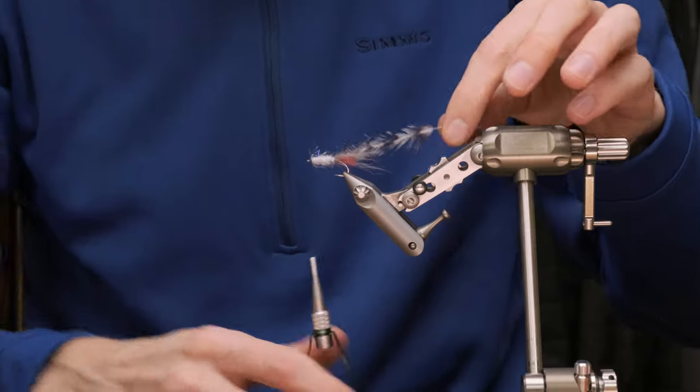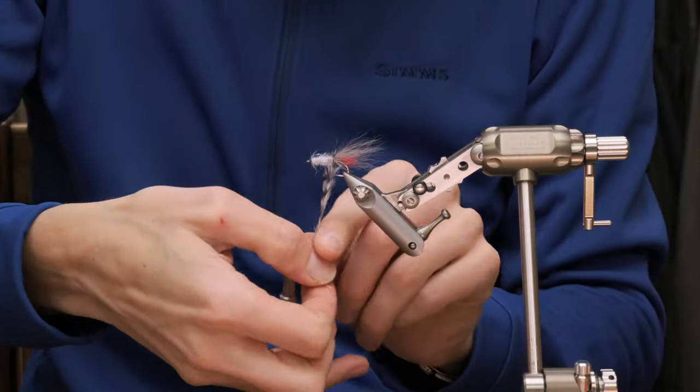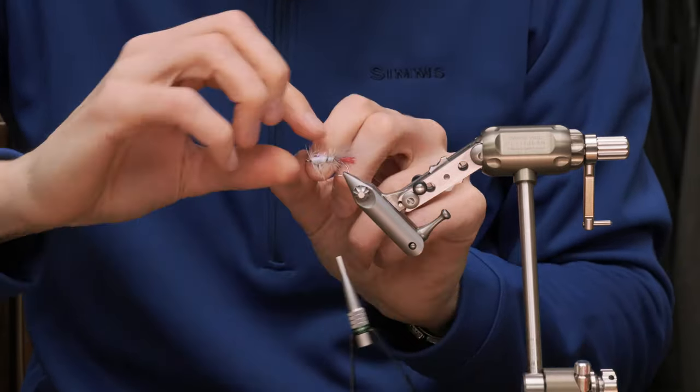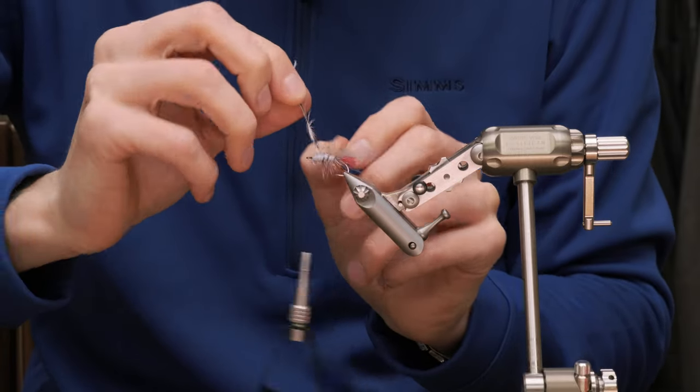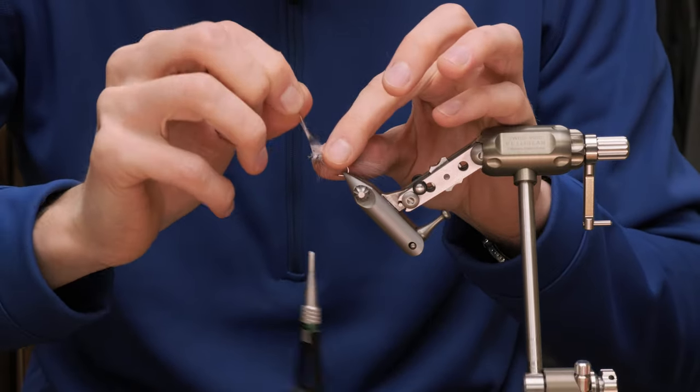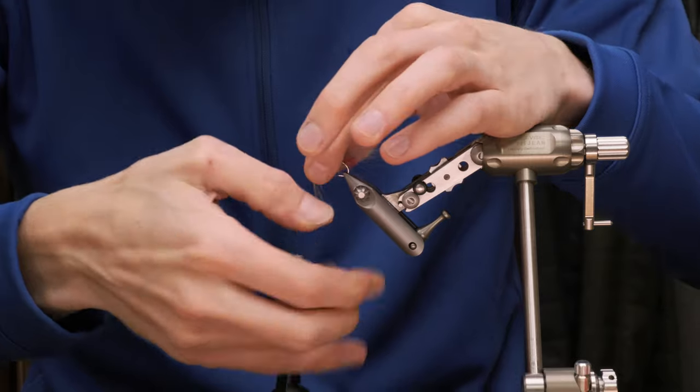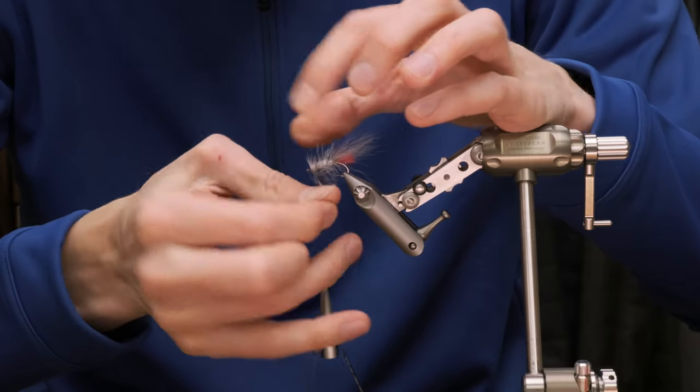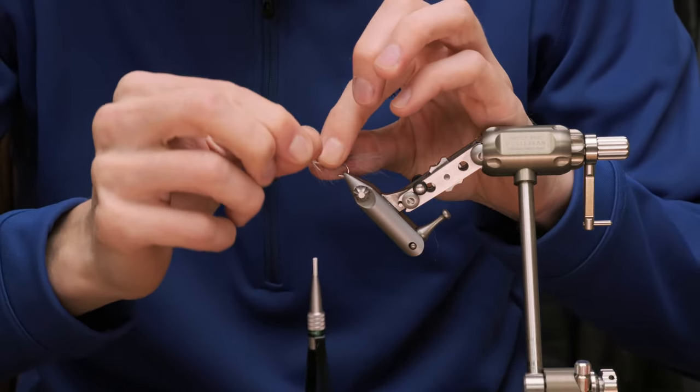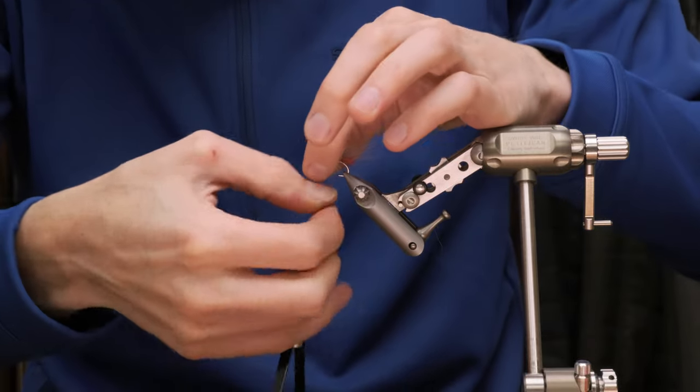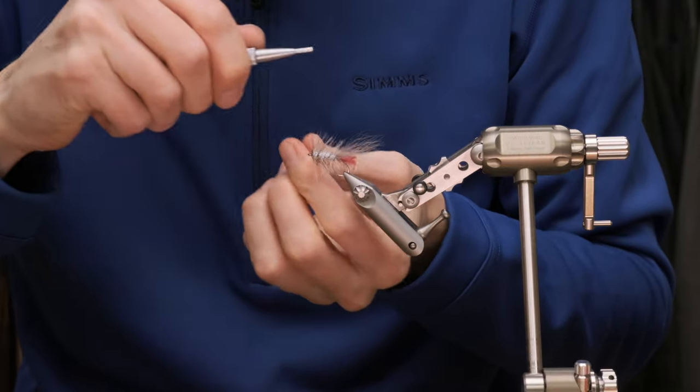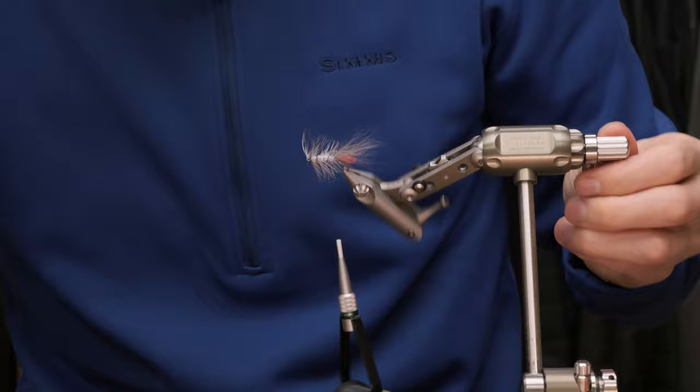Now just take the hackle. Wrap towards the eye of the hook. Tie it off. Trim away the stem.